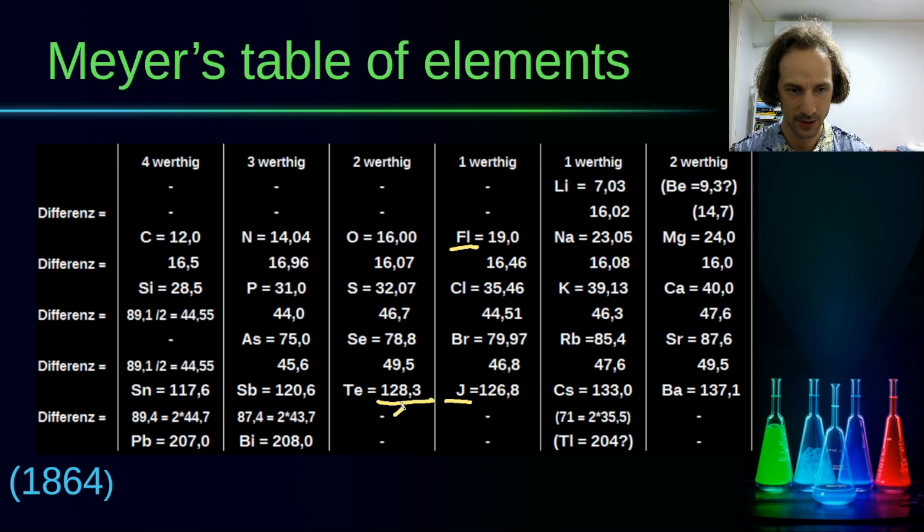What we can see here is that actually the place of the elements have been switched and the relative atomic mass was simply ignored just because iodine has the chemical similarity to fluorine, chlorine, and bromine, while tellurium has the similarity to selenium, sulfur, and oxygen.